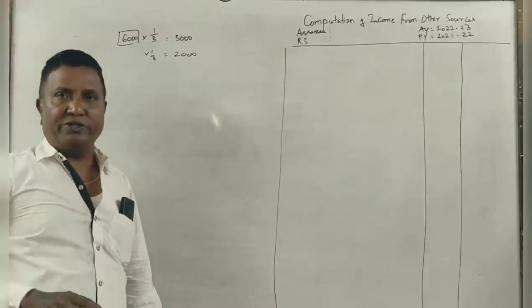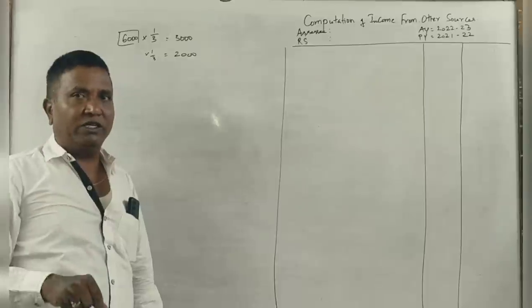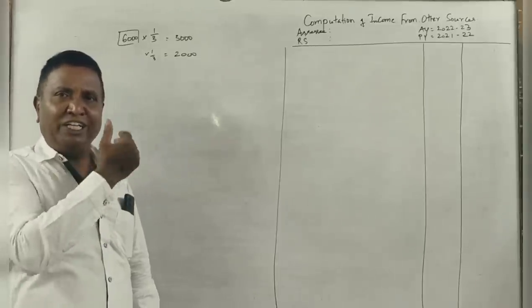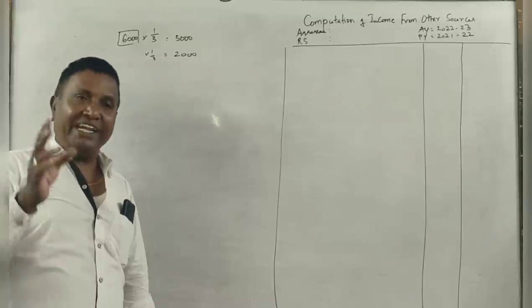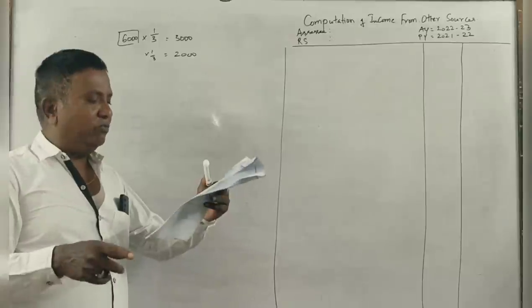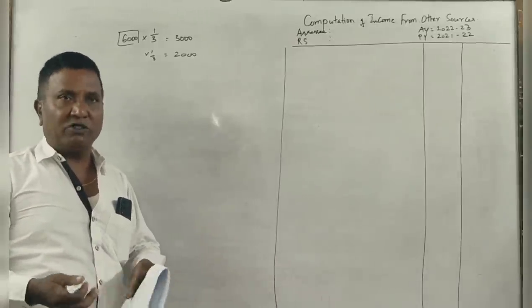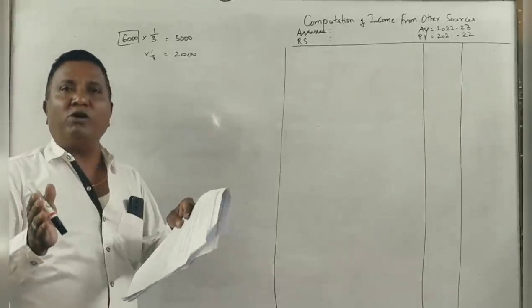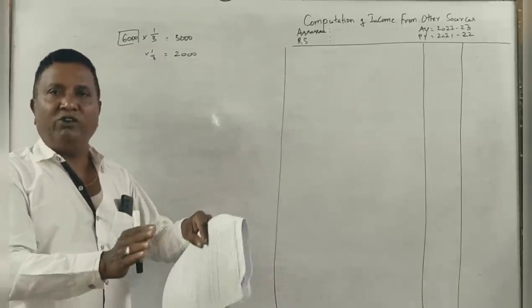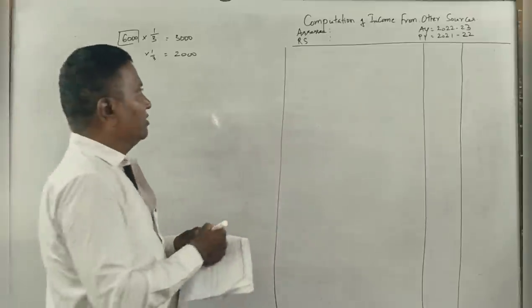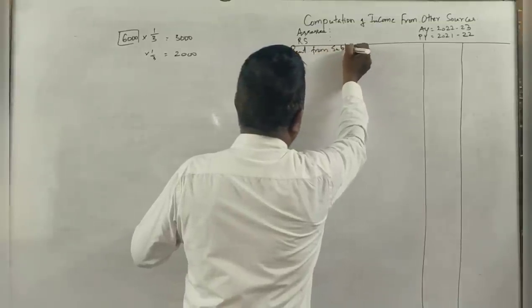He sublet one-third portion of the house for 3,000 per month. So one-third portion, how much is he paying to the original owner? Only 2,000. How much is he collecting from the tenant? 3,000. So 1,000 rupees he is getting as benefit. He is also paying for the entire house municipal taxes of 1,500 and repair expenses of 6,000.